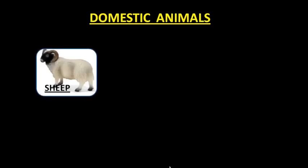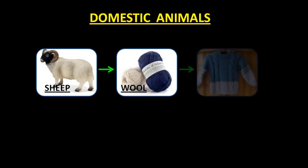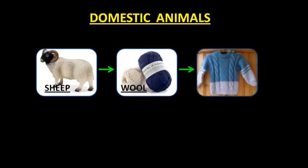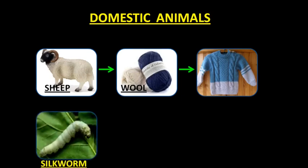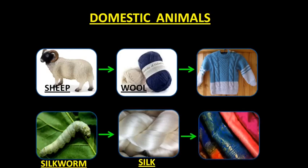Domestic animals like sheep give us wool, and this wool is used to make woolen garments like sweaters, mufflers, gloves, etc. In the same way, insects like silkworm give us silk, and this silk is used to make silk clothes. We conclude that domestic animals help us in many different ways.